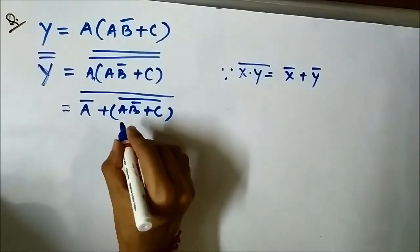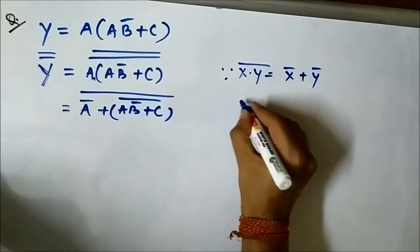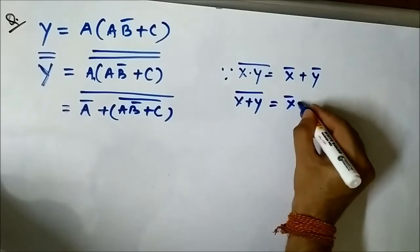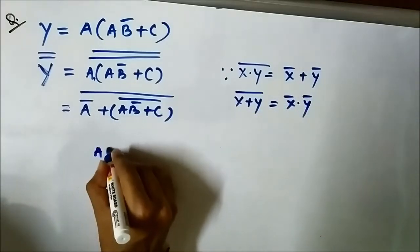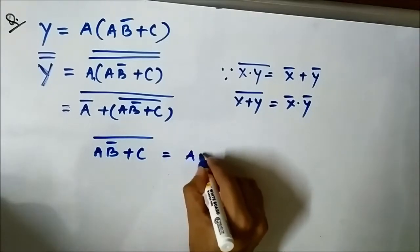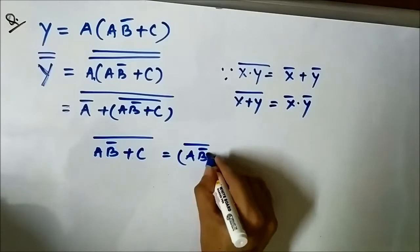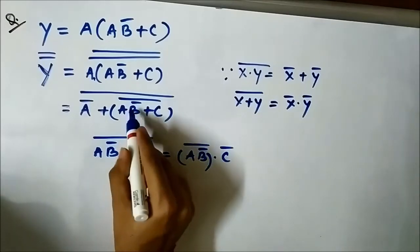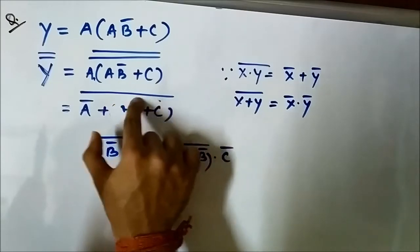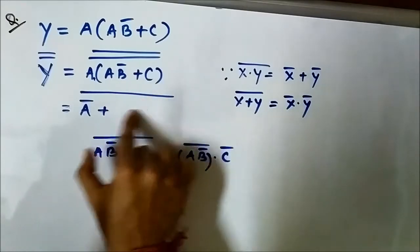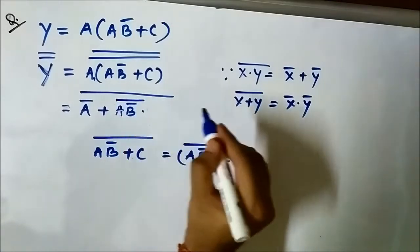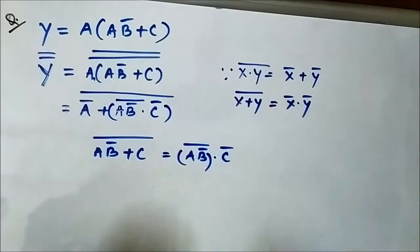Now we can convert this OR into AND. We will use the reverse De Morgan's law, which is: X or Y whole complement gives us X complement AND Y complement. So, AB complement or C whole complement can be written as AB complement whole complement AND C complement. We simply replace this portion with AB complement whole complement, C complement, using the second De Morgan's law.